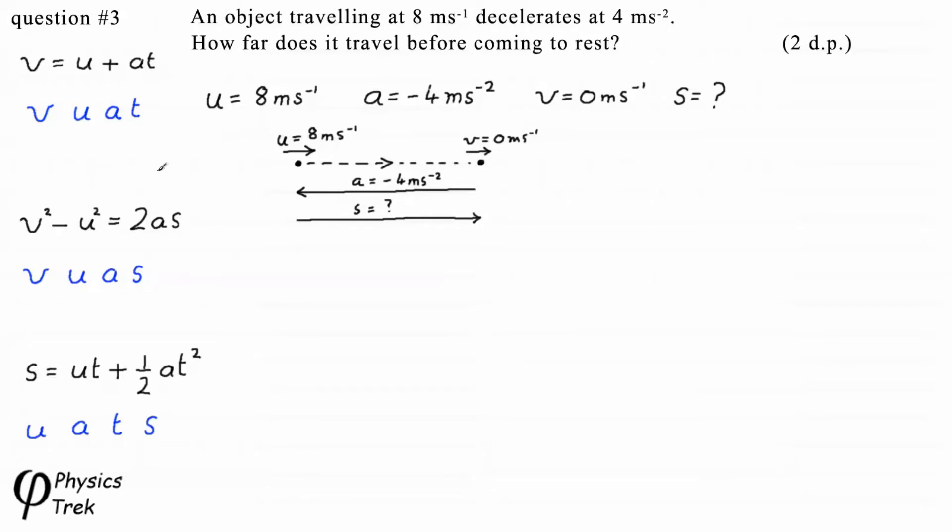Only these two equations, the bottom two, have S in them. This one has T in it. Well, we don't have T. So we will choose the top one. V squared minus U squared equals 2AS.